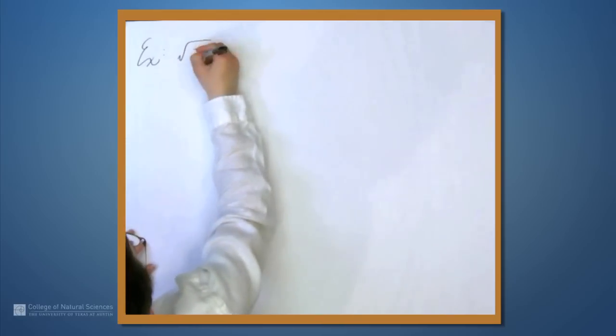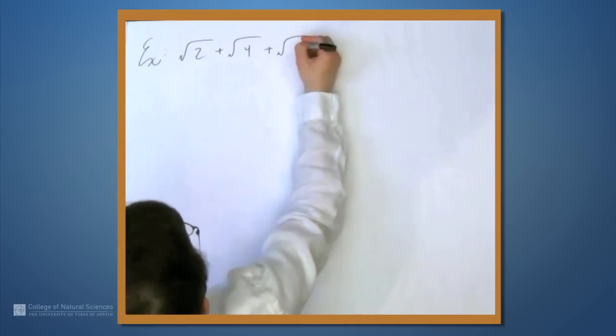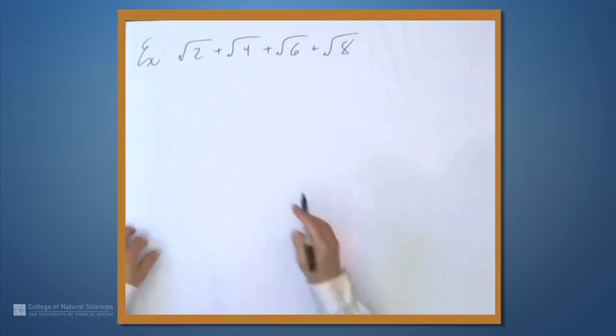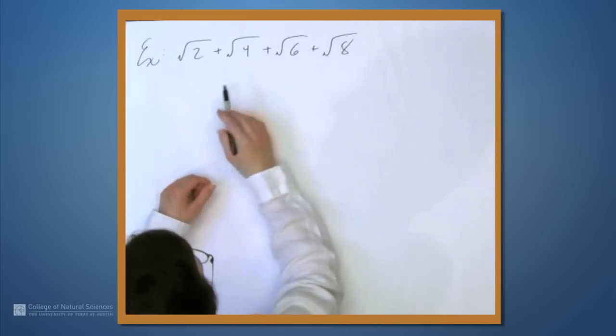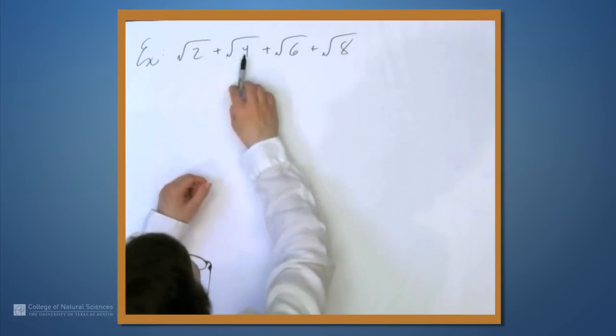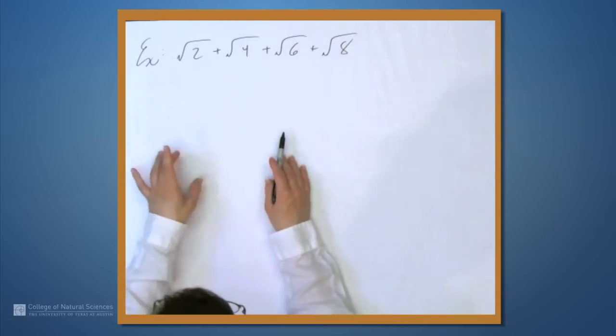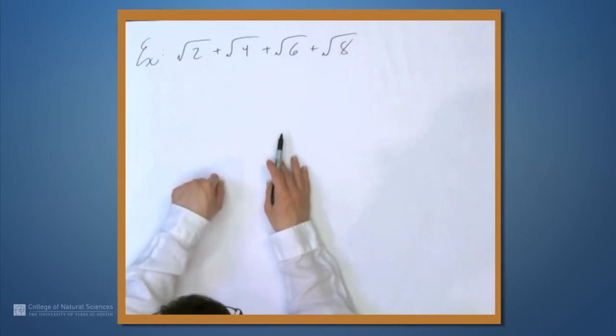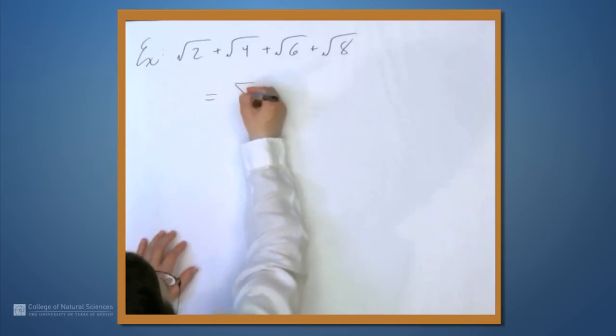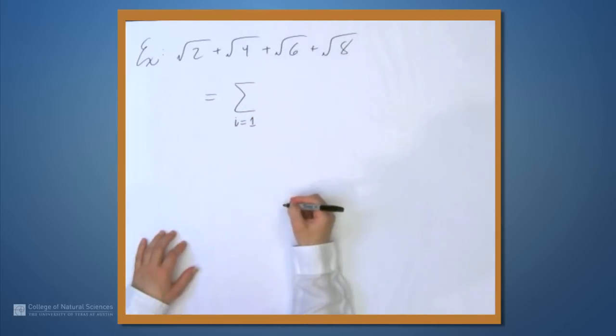Suppose we have √2, plus √4, plus √6, plus √8. What do we do? Well, we no longer have something like 1, 2, 3, 4, or 4, 5, 6, 7, because these numbers aren't increasing by 1. And this summation symbol always indicates incrementing by 1. So how can we write this? Well, let's say i from 1 to something.